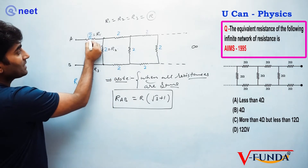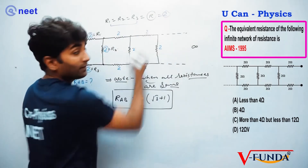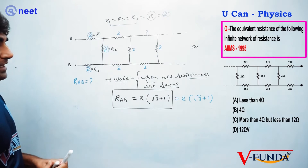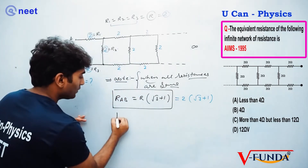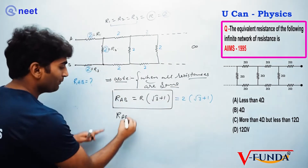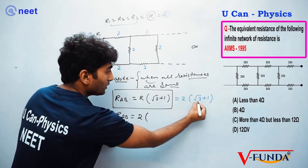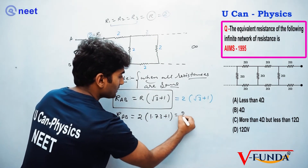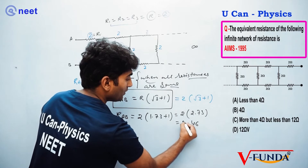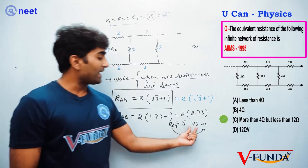Each resistance value is 2 ohm. So you just put the value: 2 times (√3 + 1). The value of √3 is 1.73, so 1.73 plus 1 equals 2.73. Then 2 times 2.73 gives approximately 5.46. This is your equivalent resistance R_AB.